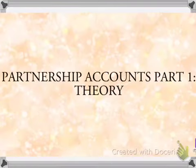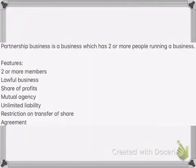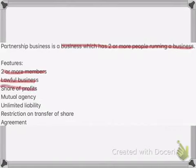So what is a partnership business? It's a business which has two or more people running it. The features of a partnership business include: two or more members, it is a lawful business, there is a share of profits where profits are shared evenly amongst all the partners, mutual agency, unlimited liability — which means if the business is in debt and is going to close down, the partners will have to sell their own personal assets to repay those debts — restriction on transfer of share, and a partnership agreement.